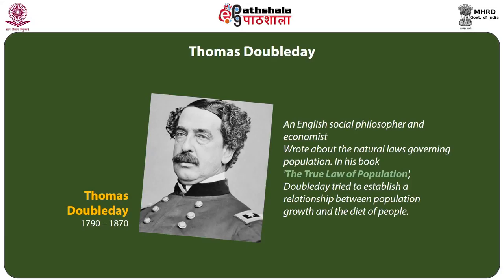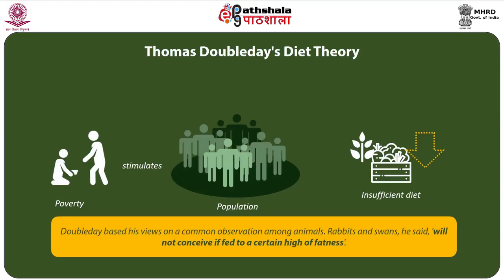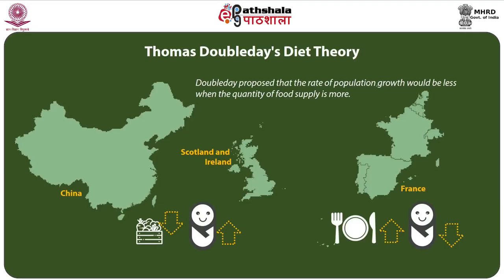Thomas Doubleday (1790–1870) was an English social philosopher and economist who wrote about the natural laws governing population. In his book, The True Law of Population, Doubleday tried to establish a relationship between population growth and the diet of people. According to him, poverty stimulates population growth since the diet of the poor is insufficient.